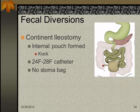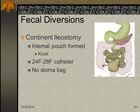Another type of fecal diversion is the continent ileostomy, also known as the Kock pouch — named after a doctor. An internal pouch is formed using part of the intestine, brought up as a stoma. The pouch holds feces — eventually stretching to hold about 600 mL — and the patient must catheterize to remove it. There is a nipple valve at the stoma site so no feces come out, and usually only a moist gauze or stoma cap is placed over it.